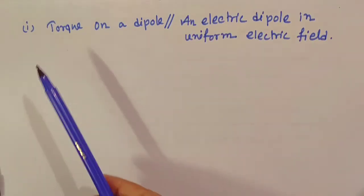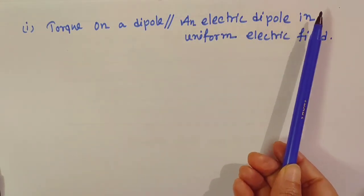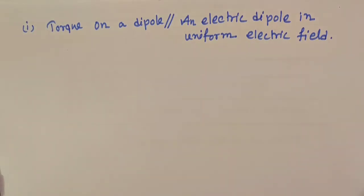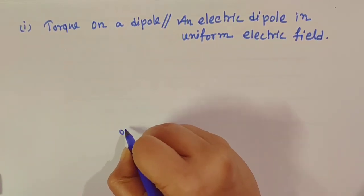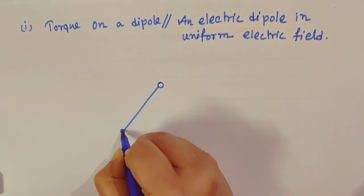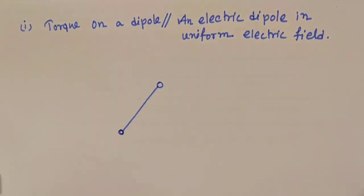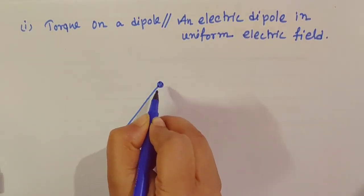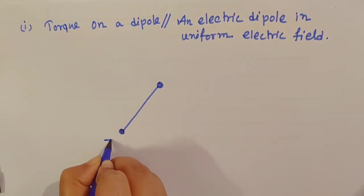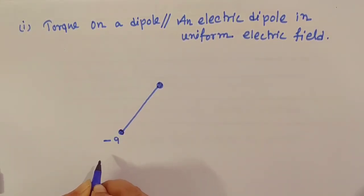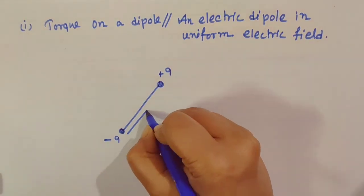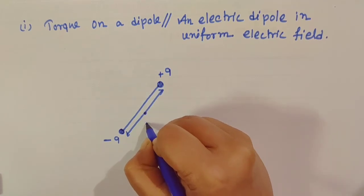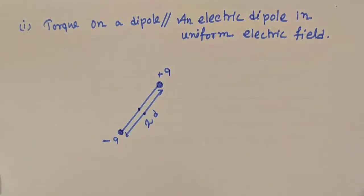Our first topic is torque on a dipole, or an electric dipole, in a uniform electric field. For calculation of torque on an electric dipole, first we have to draw one dipole. Dipole we discussed in earlier videos - dipole means here one negative charge minus Q and here one positive charge plus Q. The distance between these two charges is 2D, and this is the middle point of the dipole.